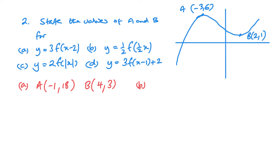Looking at part b: it's a horizontal stretch — f of (x/2). Dividing by a half is the same as multiplying by 2. So point a's x is multiplied by 2, giving −6. Then for the y, it's a half outside — so that's 3. Remember: inside the brackets affects the x horizontally and you do the opposite; outside the brackets affects the y and you do as expected.